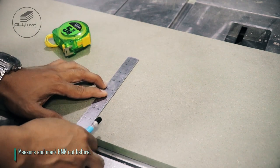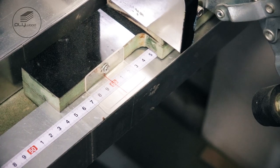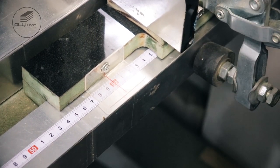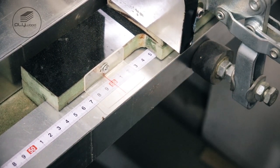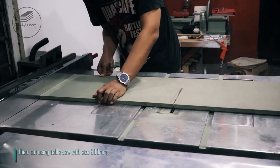Measure and mark HMR and cut before. Then, cut using table saw with size 600mm.